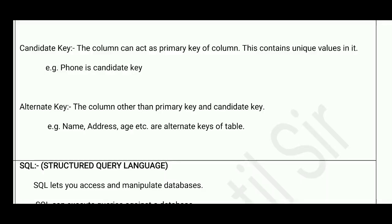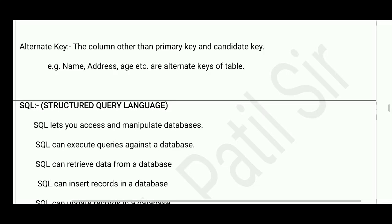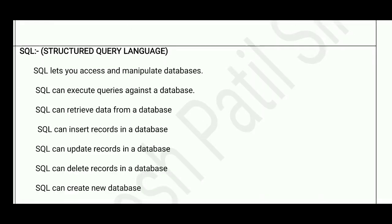Alternate key means columns other than the primary key and candidate key — name, address, age, etc. are all called alternate keys. So we have seen three keys: primary key which is unique, not repeated, and identifies a single row; candidate key which can act as a primary key but is not the primary key; and alternate key which refers to all other columns.